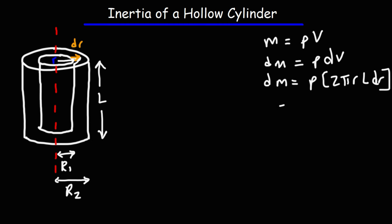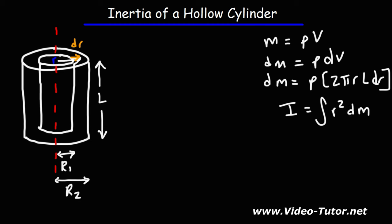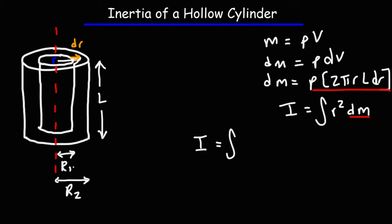In order to get the inertia, we can use this formula: the inertia is equal to the integral of r squared dm. So we replace dm with this expression. Since the mass is in the region between r1 and r2, we integrate from r1 to r2 — from the inner radius to the outer radius. So we integrate from r1 to r2, and then we have r squared times ρ times 2π r l dr.